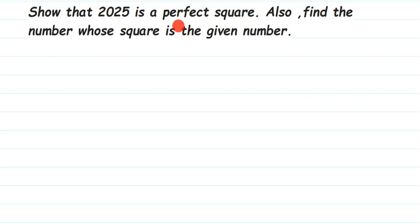To do this, I'm going to use the prime factorization method. This method is very simple — we have all learned how to prime factorize in lower classes. Remember, you should take only prime numbers when factorizing. So the number is 2025.